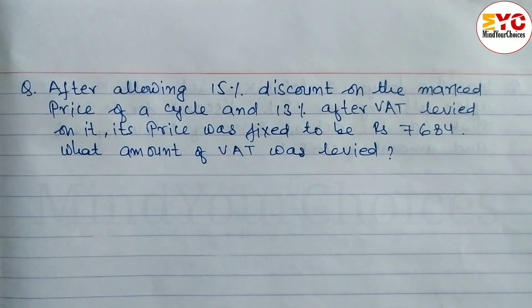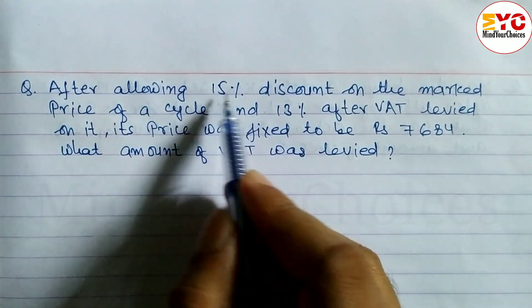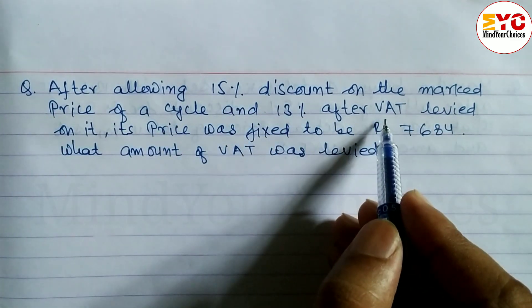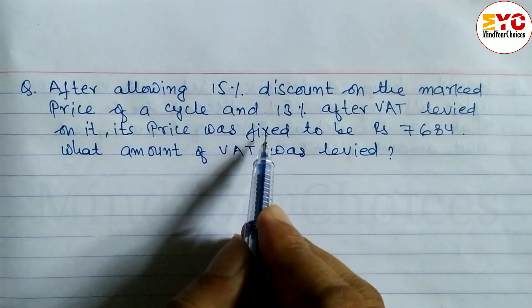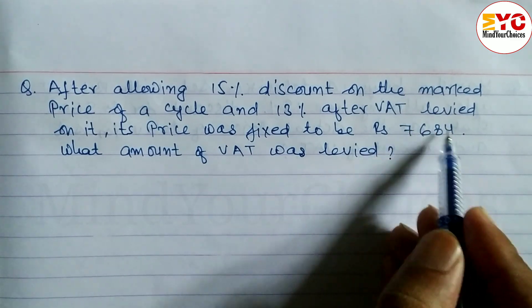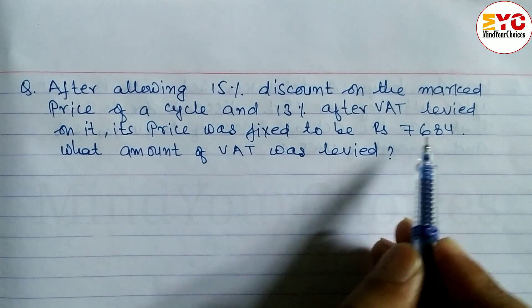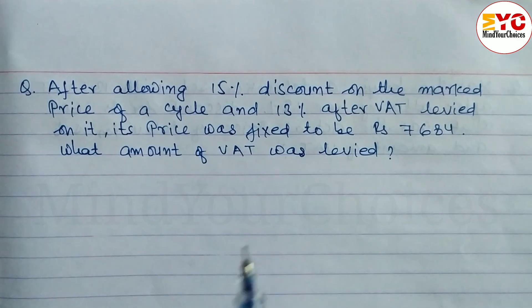Here we have a question taken from Class 9 compulsory math, from the Value Added Tax chapter. After allowing 15% discount on the mark price of a cycle, and 13% VAT levied on it, its price becomes rupees 7684. What amount of VAT was levied?